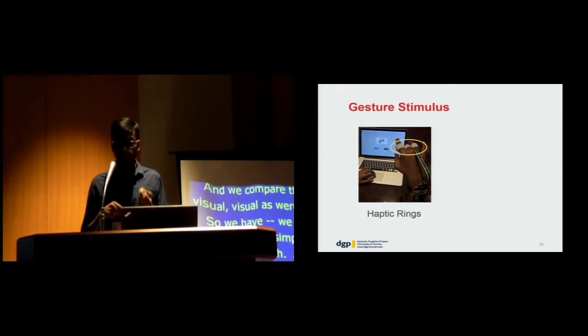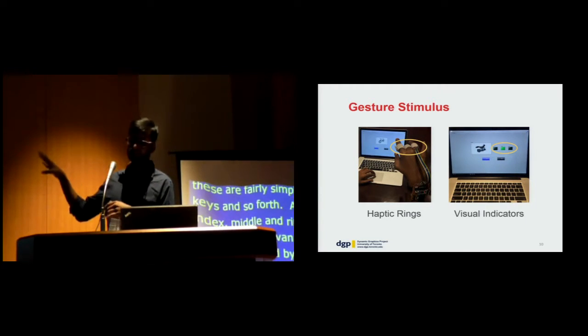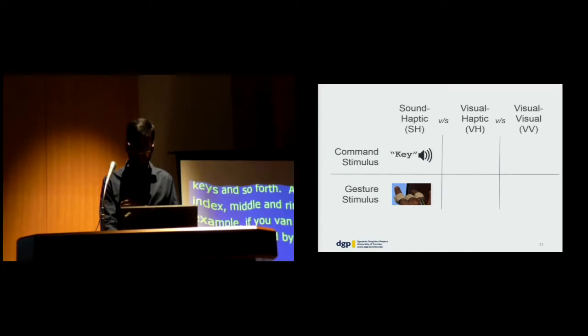For the gesture stimulus, we have two ways of providing the stimulus: haptic and visual. For haptic, we implemented vibro-tactile rings for the three fingers. For instance, for IMR, the rings will vibrate in the index-middle-ring sequence. For visual, we used a series of three on-screen indicators. Very simple.